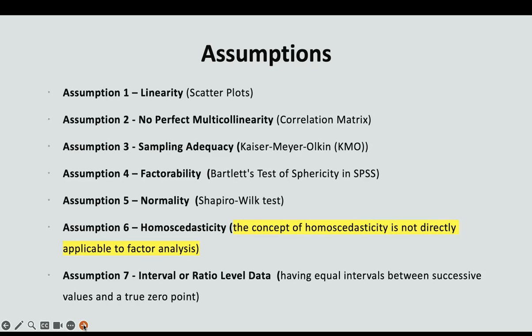Assumption 3: Sampling adequacy — we use the KMO. This measuring technique is used to assess the sampling adequacy for factor analysis. It quantifies the degree to which the observed variables in the data set are suitable for factor analysis based on their intercorrelation. The range here is above 0.5, but I like to use above 0.6 or above 0.7 — then I know I have a strong result.